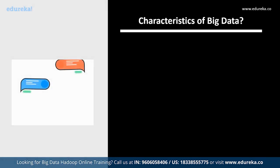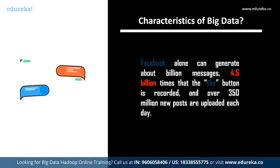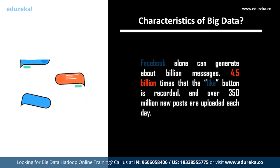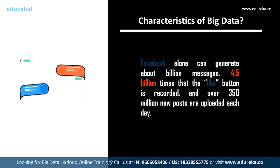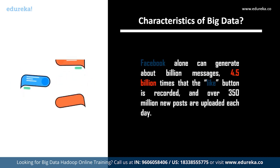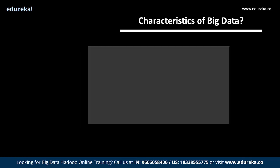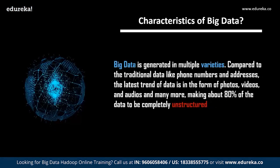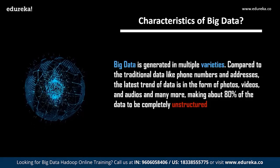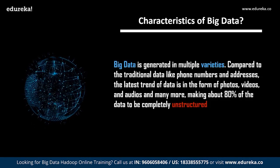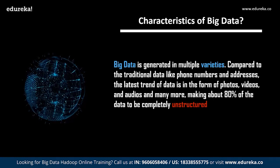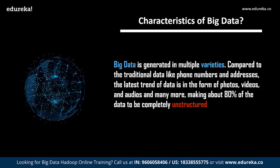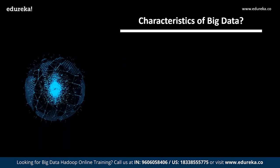Facebook alone can generate billions of messages, the like button is recorded 4.5 billion times, and over 350 million new posts are updated each and every day. Such huge amounts of data can only be handled by big data technologies. Followed by volume, we have variety. Big data is generated in multiple varieties compared to traditional data like phone numbers and addresses. The latest trend is data in the form of photos, videos, and audios, making about 80% of data completely unstructured.